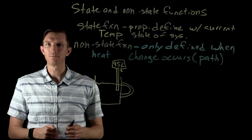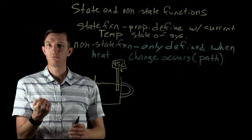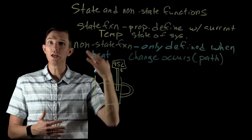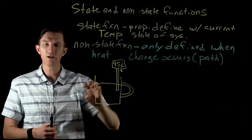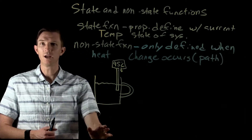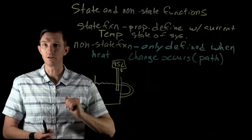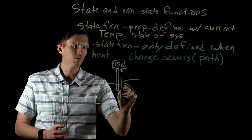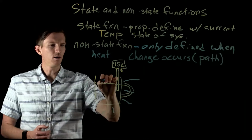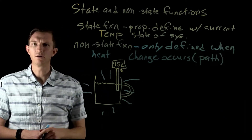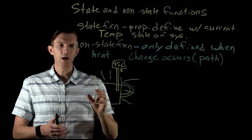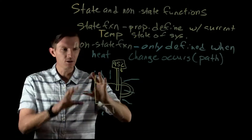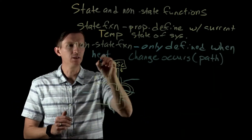Over time, we notice that temperature is going to drop and decrease. That's something we can measure at each step of the way — that's a change in our state function. We go from 95°C, then 90°C, then 80°C. It doesn't matter how it got to 80°C; it's at 80°C. Why is it changing temperature? From experience, we know the coffee mug feels hot — it's giving off heat, giving off energy.